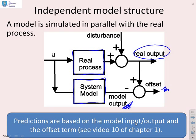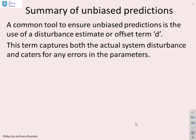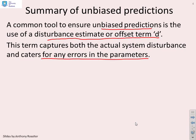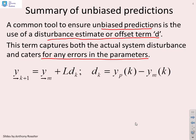Predictions now are going to be based upon solely the model. We've got an input going into the model. We've got an output coming out of the model. And we're going to use these two values to form the predictions and then use this offset term to give ourselves a correction. Now that was discussed briefly in Video 10 of Chapter 1. A common tool to ensure unbiased predictions is the use of a disturbance estimate or an offset term, D. This term captures both the actual system disturbance, but it will also cater for any errors in the parameters. This is a reminder then of what we did in the first chapter.